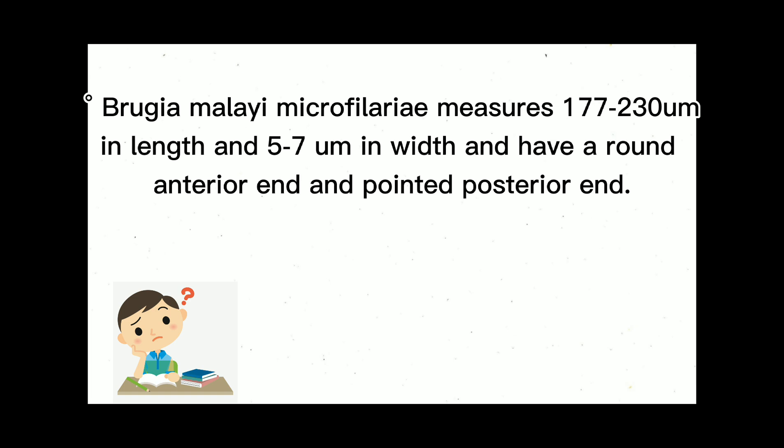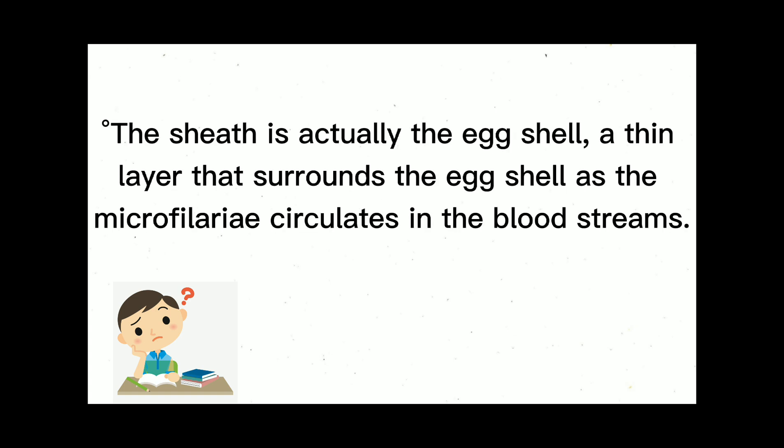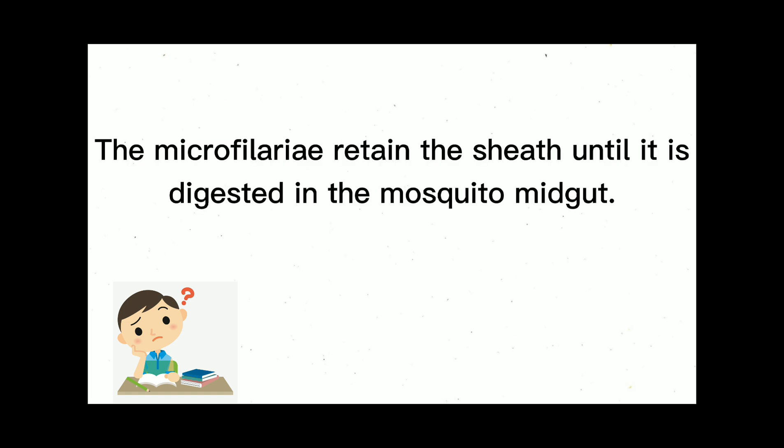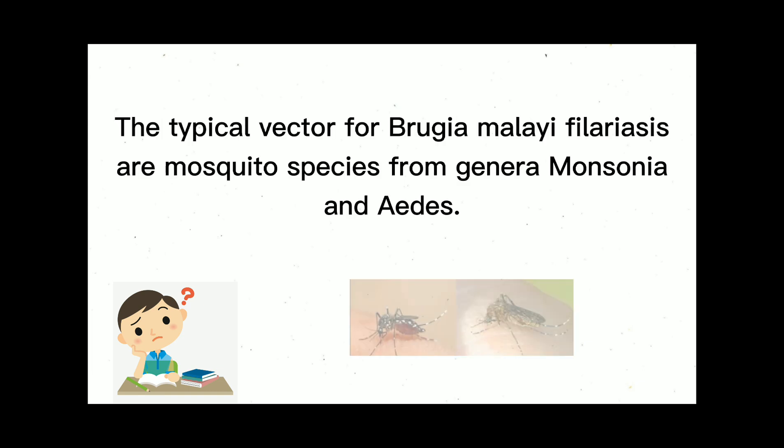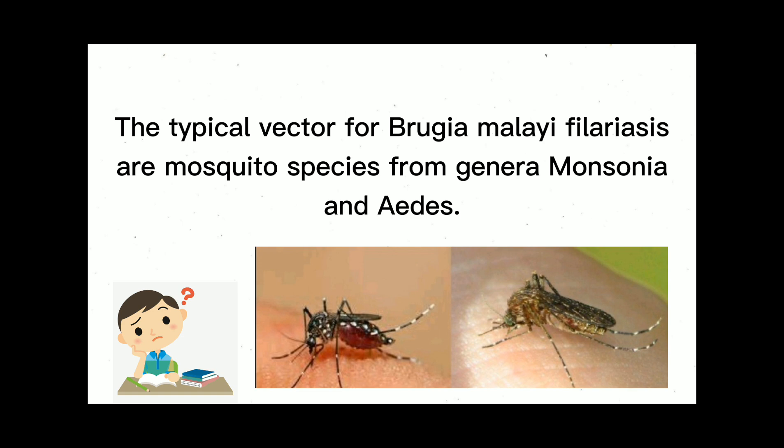Female adult worms measure between 43 to 55 micrometres in length by 130 to 173 micrometres in width. Brugia malayi microfilariae measure 177 to 230 micrometres in length and 5 to 7 micrometres in width, with a rounded anterior end and pointed posterior end. The sheath, actually the eggshell, is a thin layer surrounding the microfilaria as it circulates in the bloodstream and is digested in the mosquito mid-gut. The typical vectors are mosquito species from the genera Mansonia and Aedes.